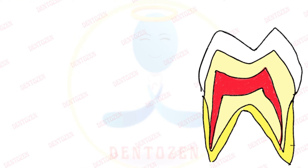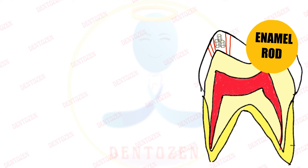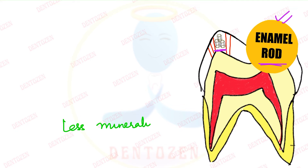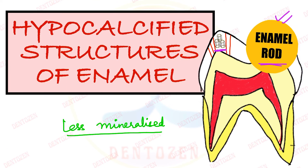Hi everyone, welcome back to Dentizen. Now if we look at enamel, it is made up of enamel rods within which we have calcium hydroxyapatite crystals. Enamel is one of the most mineralized structures of the tooth, but there are some areas in enamel which are less mineralized — their mineral content is less compared to other areas — and these areas are known as hypocalcified structures of enamel.